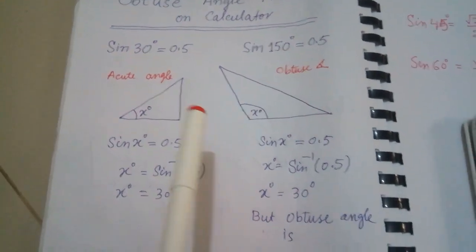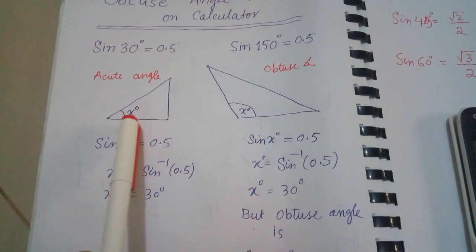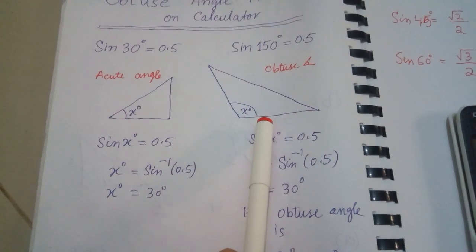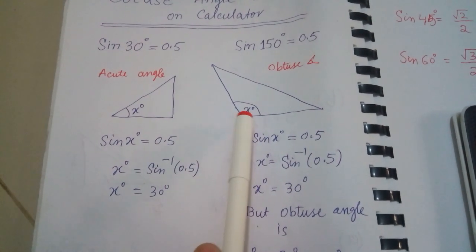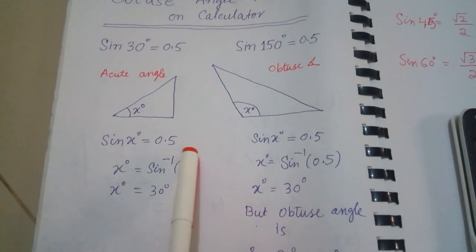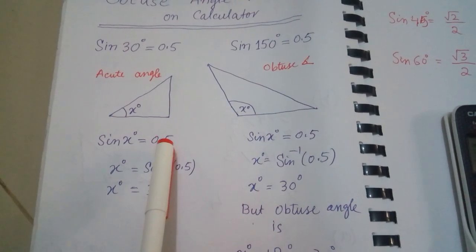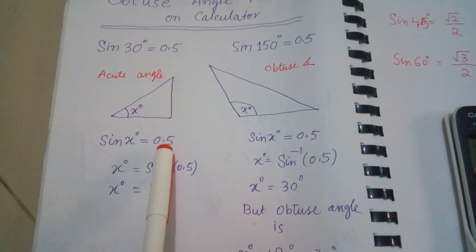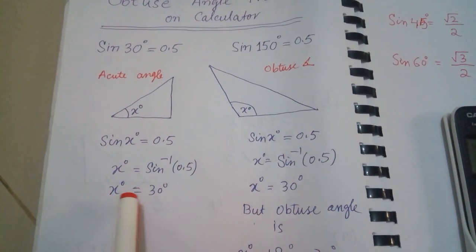So let's have a question here. This is an acute angle triangle where this angle is less than 90, and here we have an obtuse angle triangle where the angle is more than 90. Suppose sin x = 0.5. If we try to find the angle using sin inverse, the calculator gives us 30 degrees.